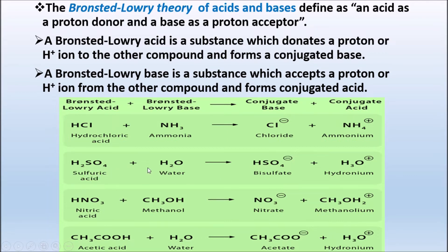Similarly, sulfuric acid plus water: sulfuric acid is Bronsted-Lowry acid and water is Bronsted-Lowry base. HSO4- (bisulfate) is the conjugated base formed. Water accepts H+ to form H3O+ which is the conjugated acid. Next example: HNO3 (Nitric acid) and CH3OH (Methanol) - nitric acid is Bronsted-Lowry acid and methanol is Bronsted-Lowry base. NO3- (nitrate) is the conjugated base and CH3OH2+ (methanolium) is the conjugated acid.